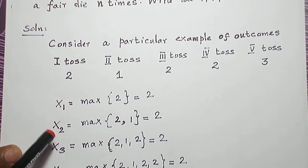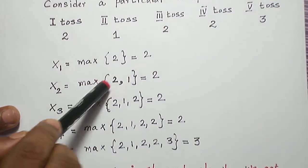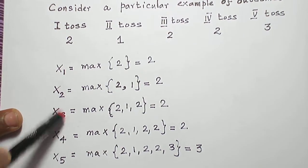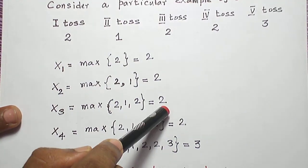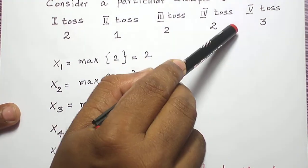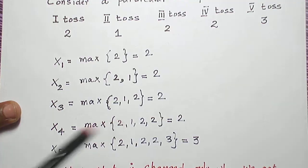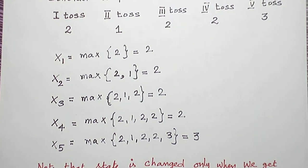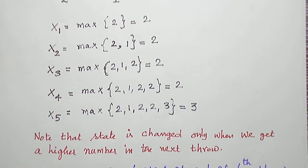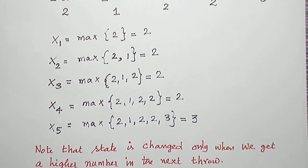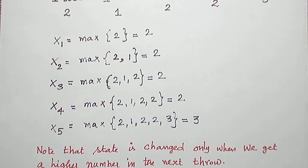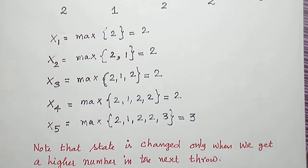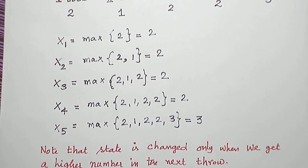Now if you take X2, maximum among the first two numbers, the maximum is 2. X3, maximum among the first three numbers is 2. X4, maximum among the first four numbers is 2. X5, maximum among the first five numbers is 3. And note that since we are taking the maximum, the number will change only if we are getting higher numbers. If we get either the same number or lower numbers, the maximum is not changed.